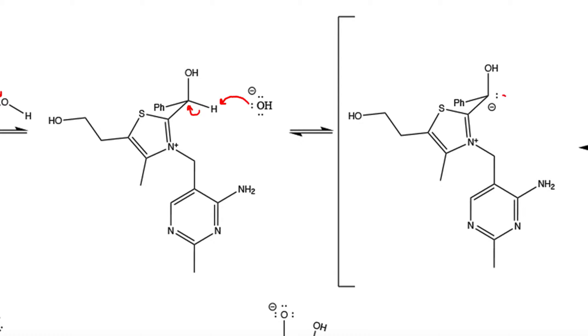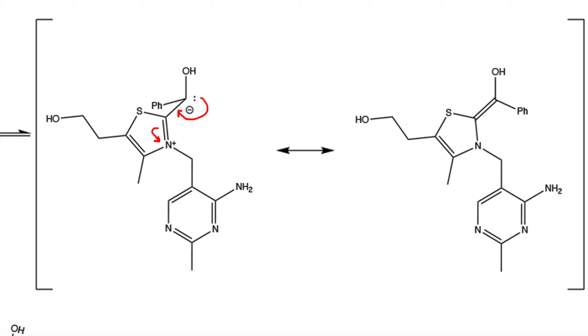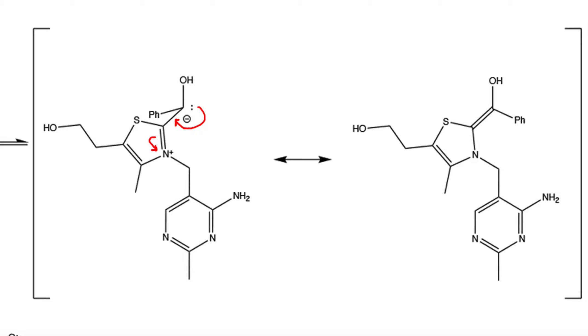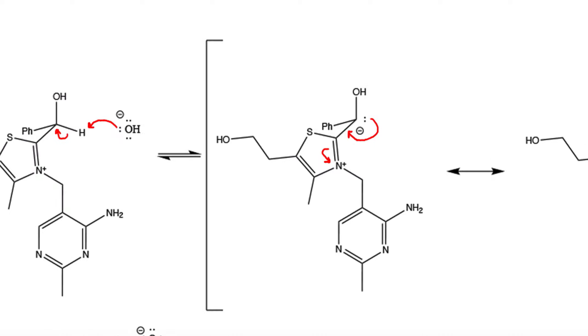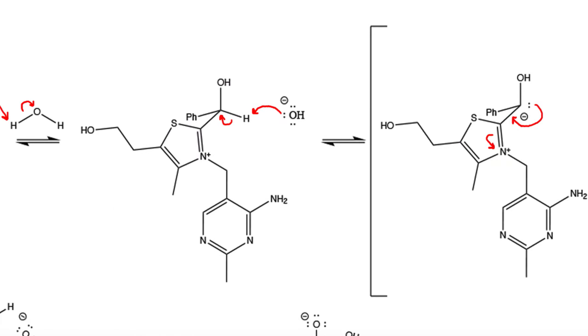The lone pairs form a double bond and the pi electrons move onto the nitrogen, creating our second resonance structure. The formation of this resonance-stabilized intermediate explains why this proton is acidic, and this only occurs because of the presence of this thiamine group.